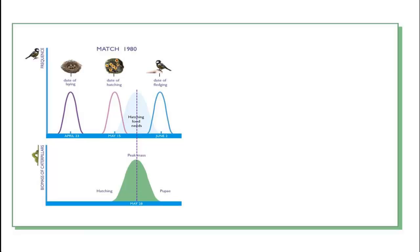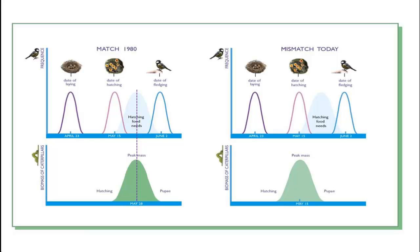The caterpillar food peak is highly sensitive to temperature changes in late spring which have increased steadily since the 1980s. As a result the food peak has advanced by almost three weeks. Great tit laying dates on the other hand are sensitive to temperatures in early spring which have not increased at the same rate. Consequently the rate of advancement in laying dates has been much slower than that of the food peak leading to a steadily increasing mismatch.